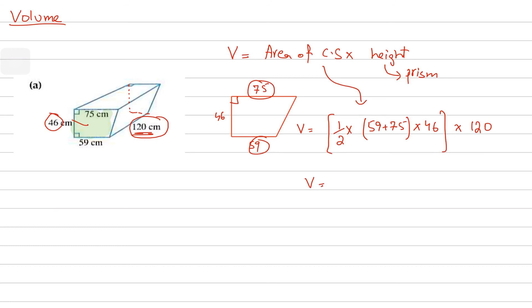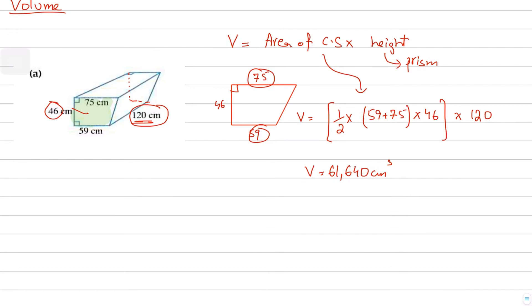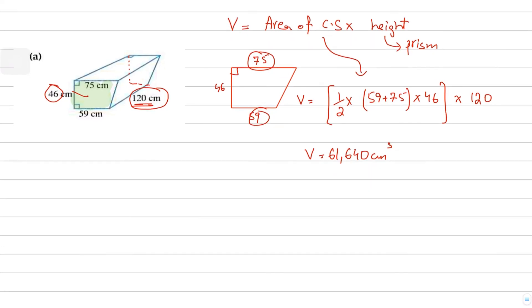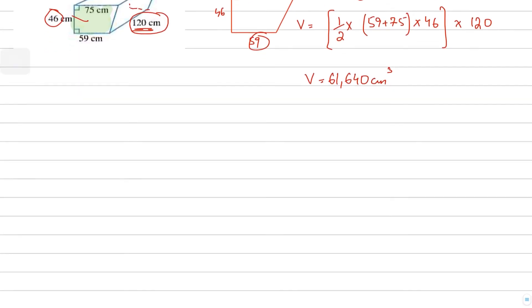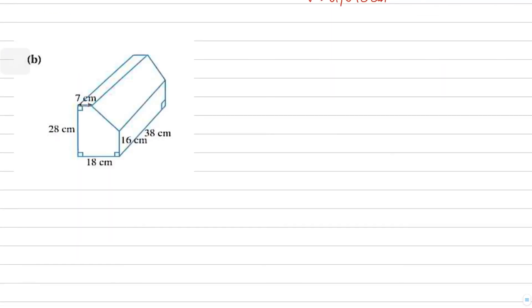The volume works out to 61,640 cm³. Don't forget that the unit for volume is cm³.